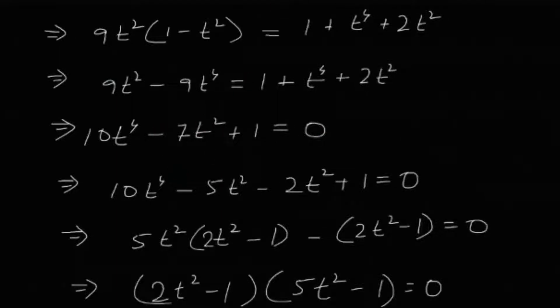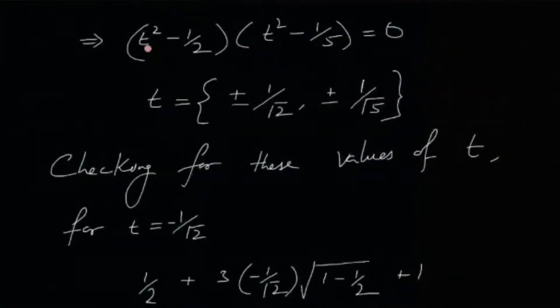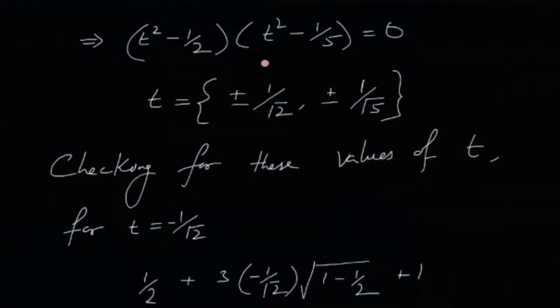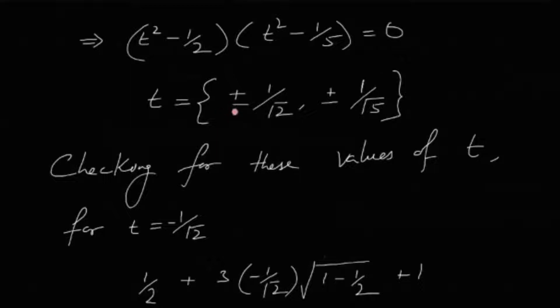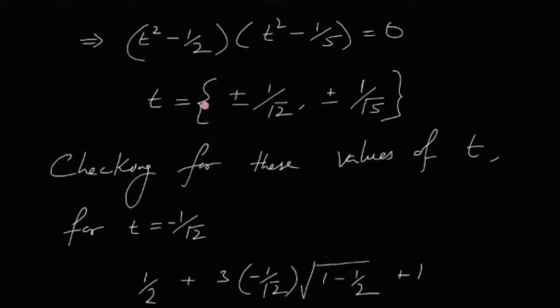Ultimately we get (t² - 1/2)(t² - 1/5) = 0. That means t = ±1/√2 and t = ±1/√5, giving us four candidate solutions.